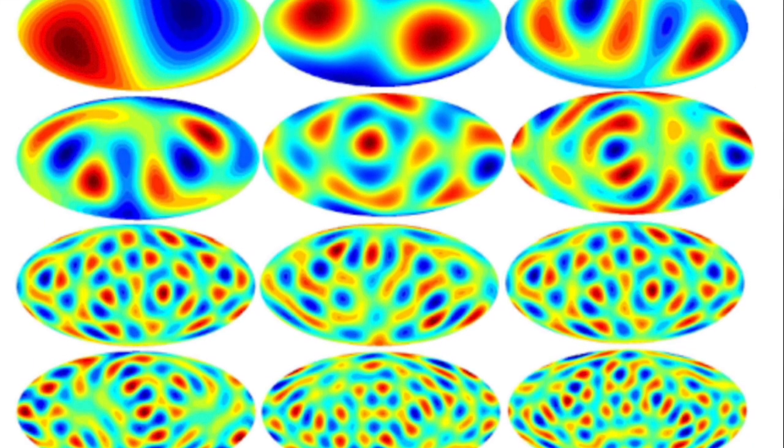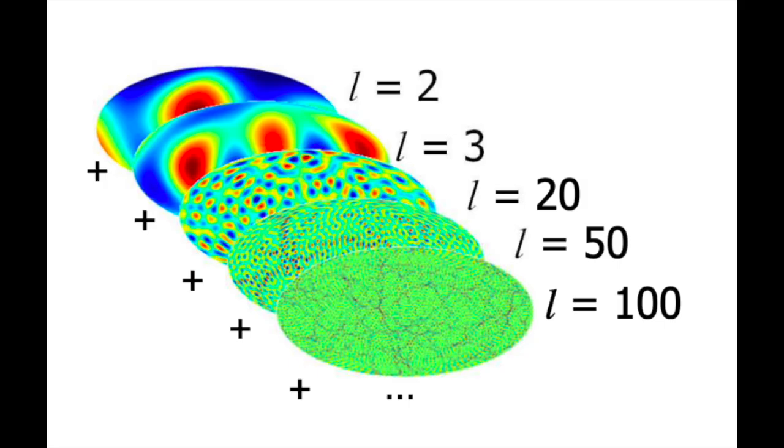Each multipole has an associated L value. It is these multipoles and their associated L values which are plotted on the CMB power spectrum from L equals 2 to L equals 2500. As the L values get higher, the angular resolution of their patterns also increases.